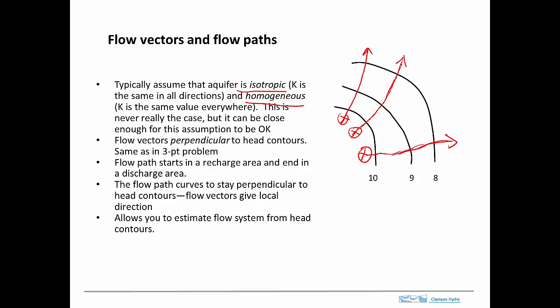Each starting point produces only one flow path — that's a very important point. There's no way to have more than one flow path from a single starting point. Think of it this way: there's only one path a molecule of water will take through the aquifer from a given starting point. So for each starting point given in exercises, you should draw only one flow path.